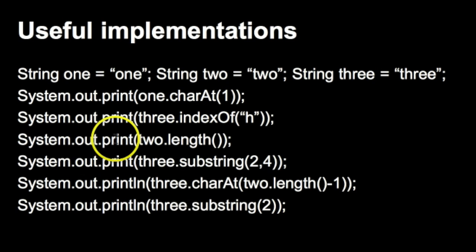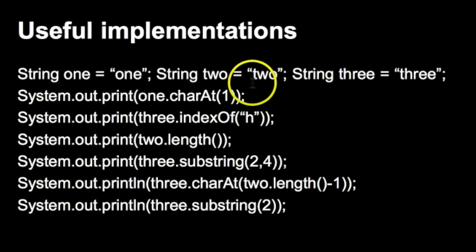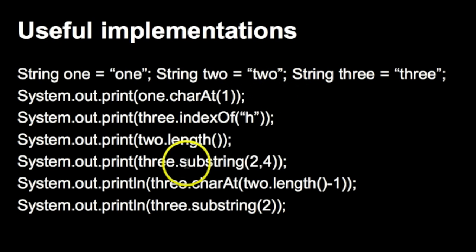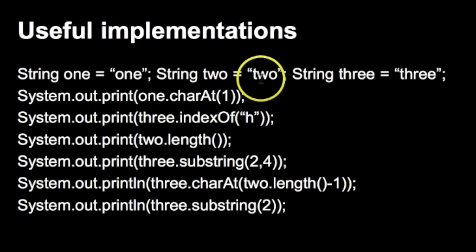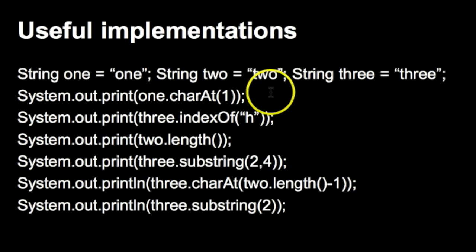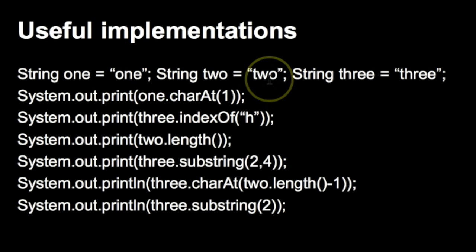The next print statement, System.out.print two.length(), is pretty self-explanatory. It takes the length of the string, and this is super important to understand because you can do a ton of stuff with it. The string 'two' is of length 3. Although the index starts at 0, the length is still 3 characters. Keep in mind: if you tried to find charAt(3), it would give an error. To find the last character 'o', you'd use charAt(2), because elements start at 0.